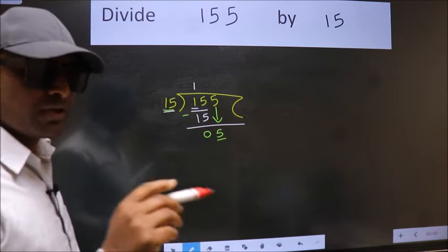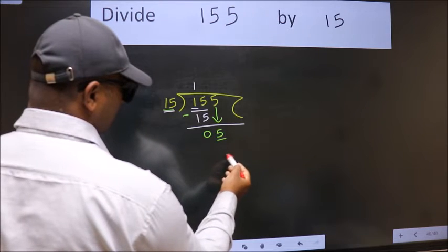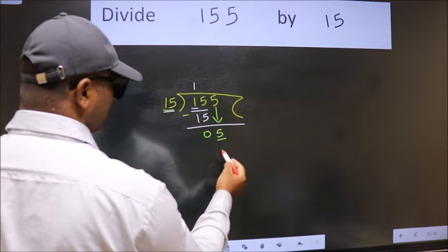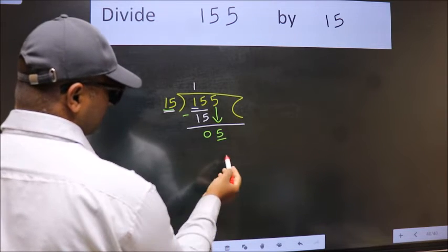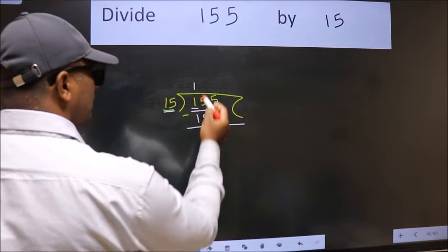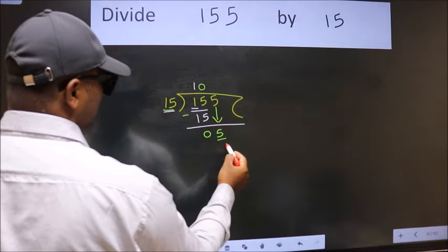Instead of that, what we should think of doing is, which number should we take here? If I take 1, we will get 15. But 15 is larger than 5. So what we do is, we take 0 here. So 15 into 0, 0.